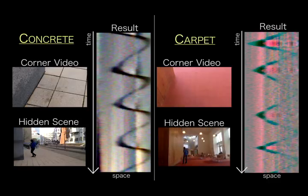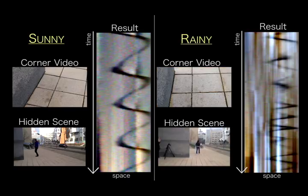It also works with a variety of ground surfaces, such as concrete or carpet as shown here. We have also demonstrated that our method works on tile, brick, linoleum, and hardwood surfaces. We were even able to reconstruct a video of a hidden scene while it was raining.